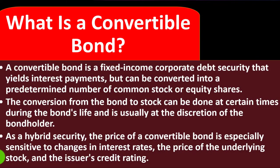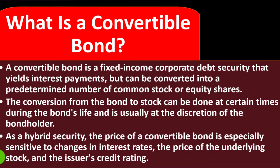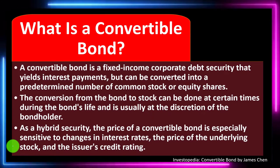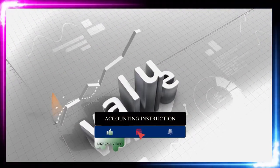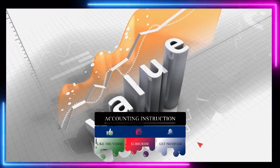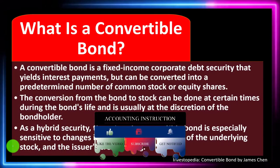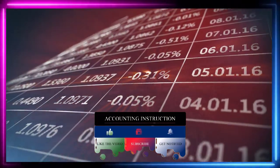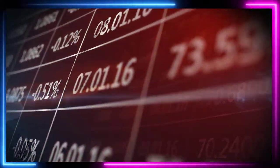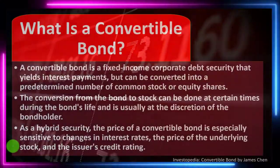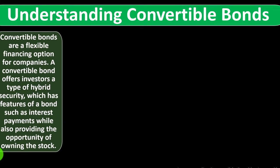As a hybrid security, the price of a convertible bond is especially sensitive to changes in interest rates, the price of the underlying stock, and the issuer's credit rating. These are the components and factors we're going to take into consideration when thinking about the value of convertible bonds — interest rates, the price of the underlying stock, and the issuer's credit rating, meaning how likely is the company to be able to continue to pay its obligations in the future.